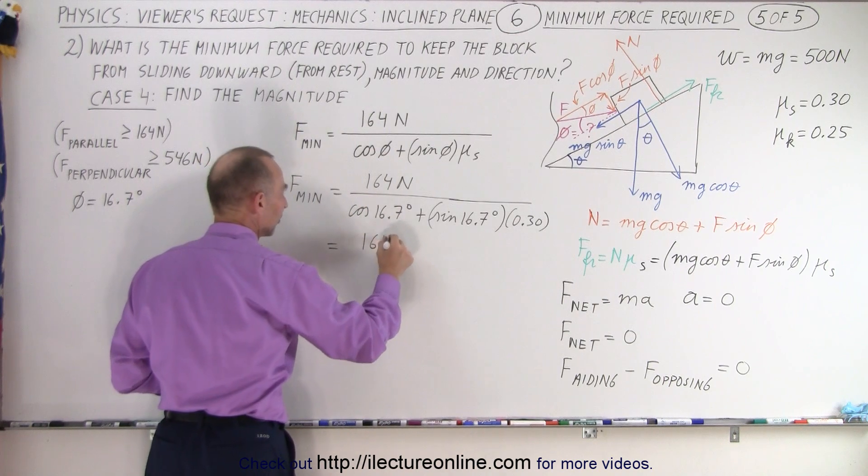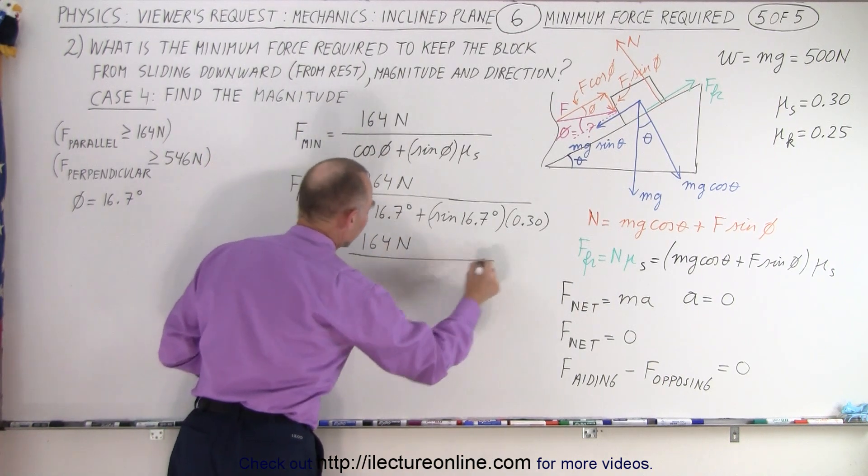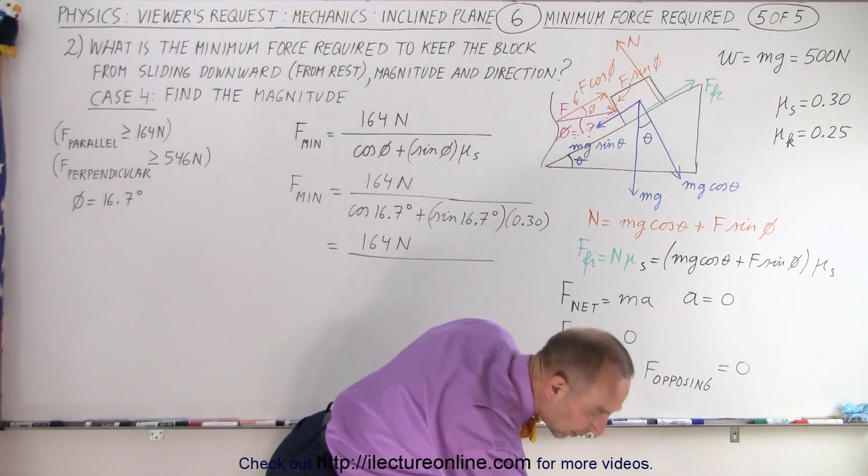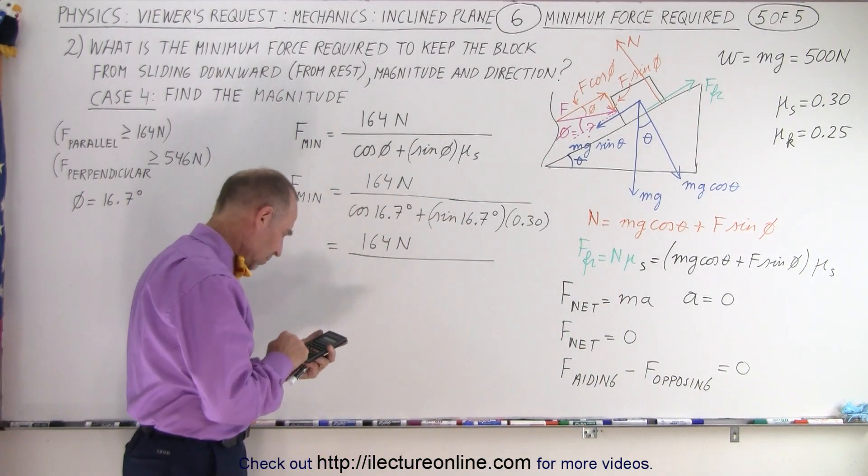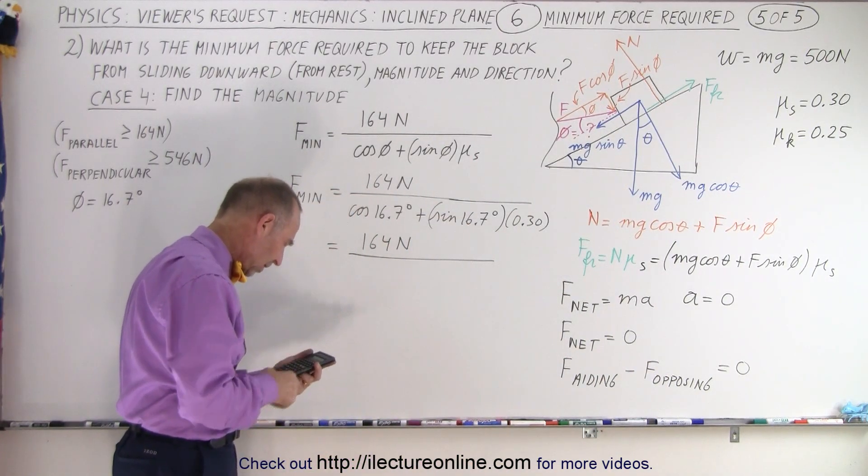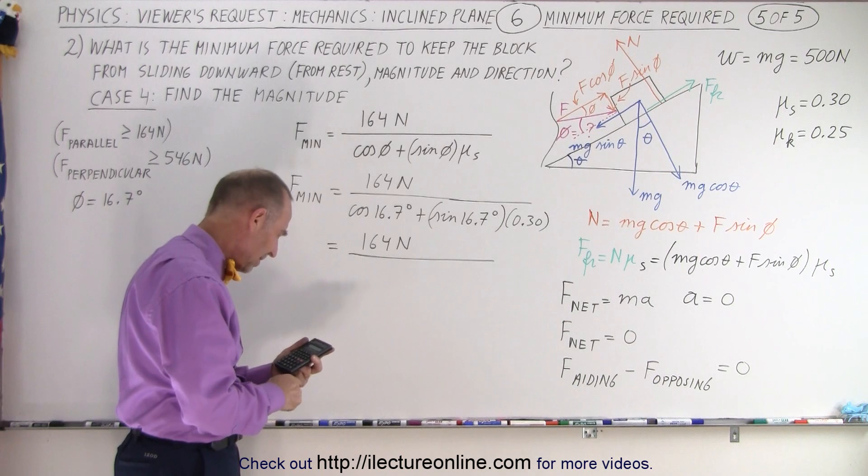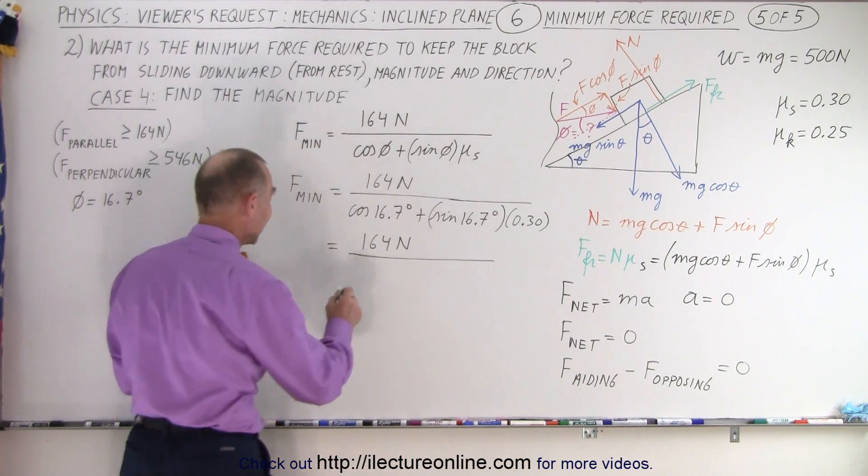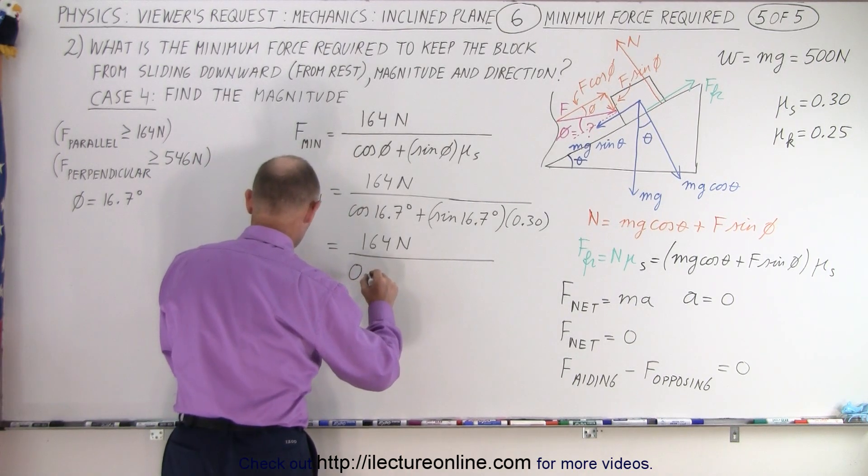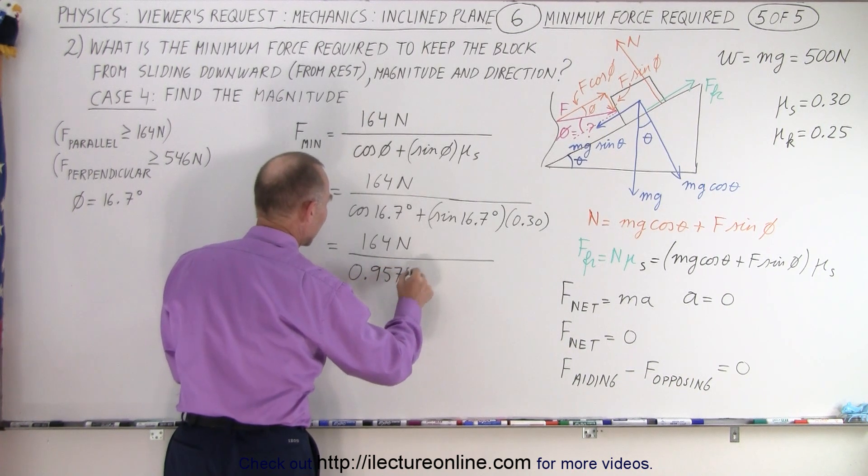So this is 164 newtons divided by, now 16.7, take the cosine of that, which is 0.9578, 0.9578,